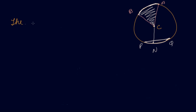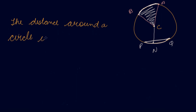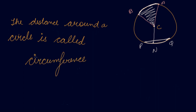Now, the distance around a circle is called circumference. Take a thread, start from point A and rotate it around the circle back to point A again. Then open up the thread — that distance around the circle is known as your circumference.